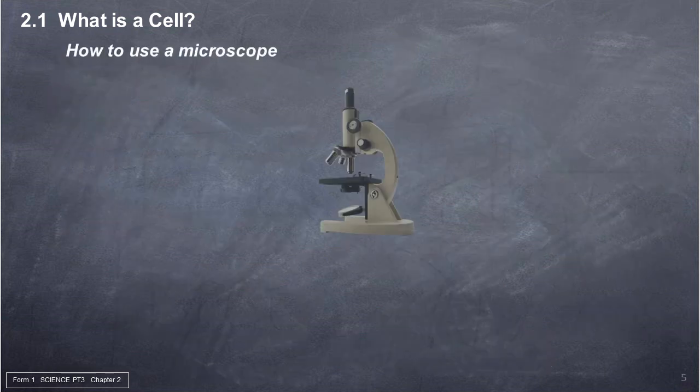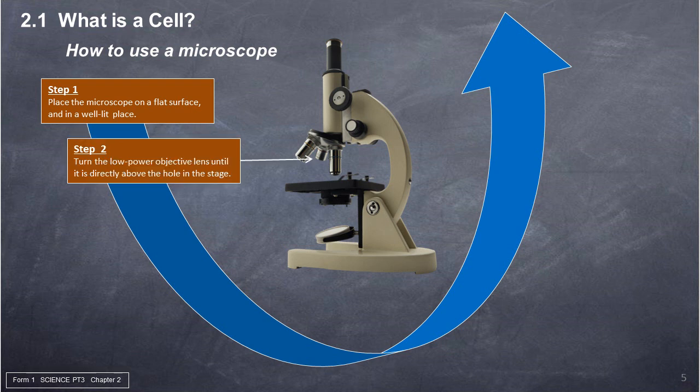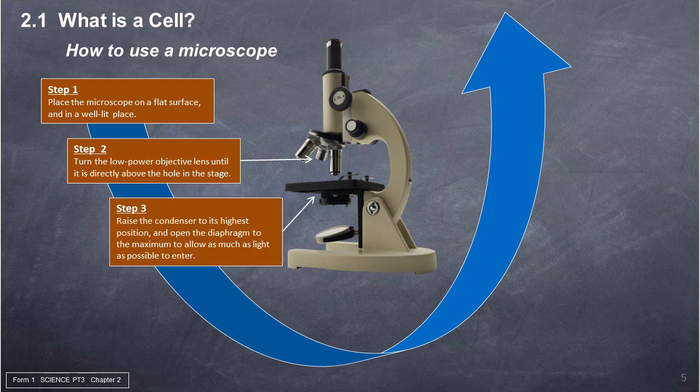How to use a microscope. Step 1: Place the microscope on a flat surface and in a well-lit place. Step 2: Turn the low-power objective lens until it is directly above the hole in the stage. Step 3: Raise the condenser to its highest position and open the diaphragm to the maximum, to allow as much light as possible to enter.